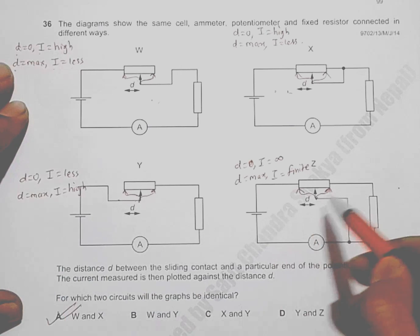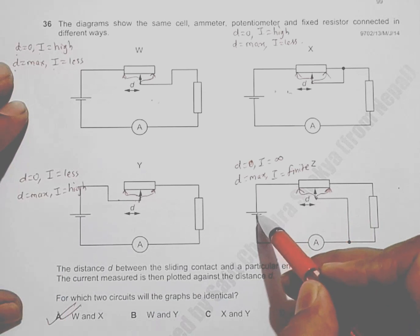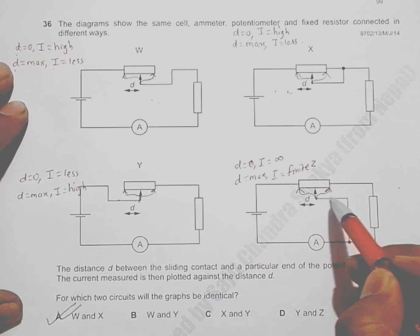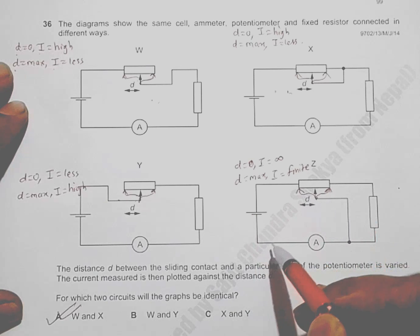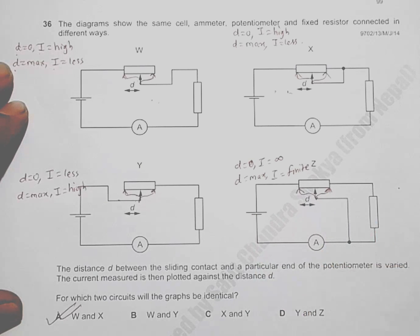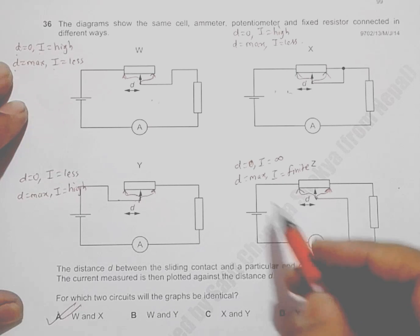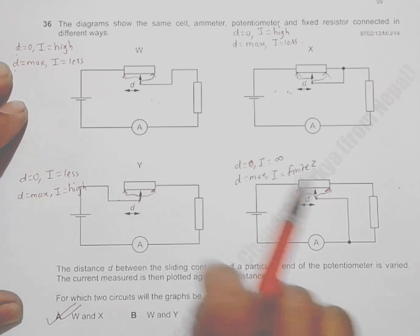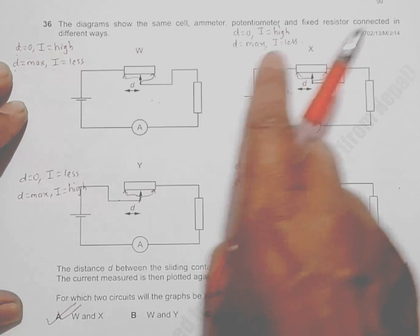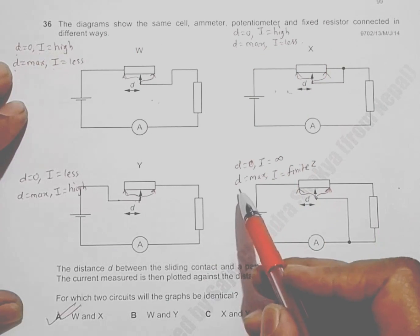Diagram four is slightly more complex. When the contact is at the left side (d=0), current creates a total short circuit — limited only by the internal resistance of the cell. So d equals zero gives effectively infinite current. This is different from diagram three, which only gave high current at d=max.